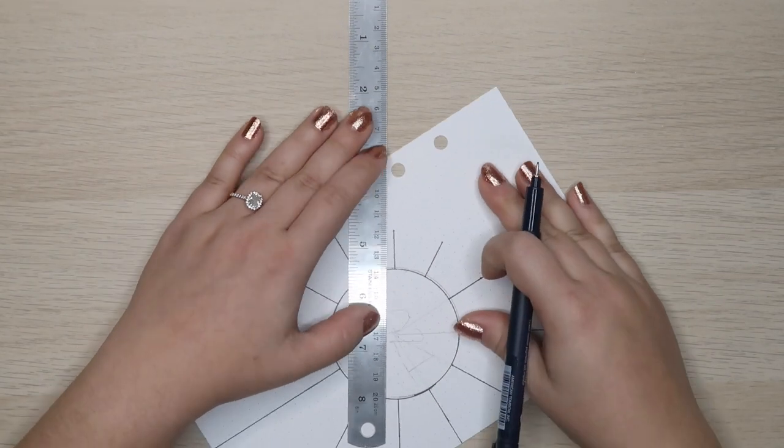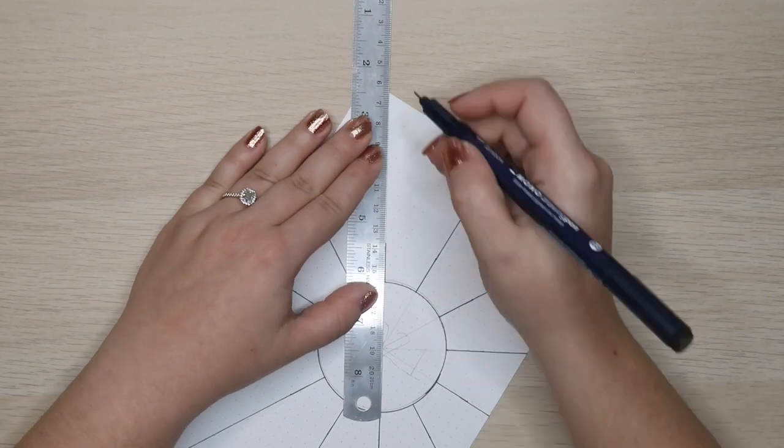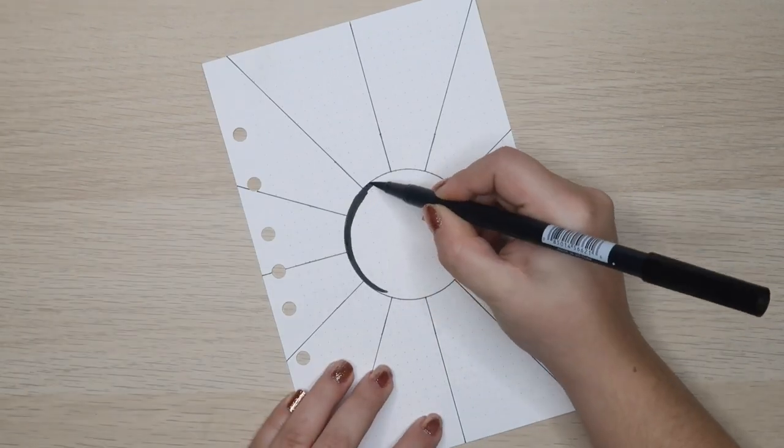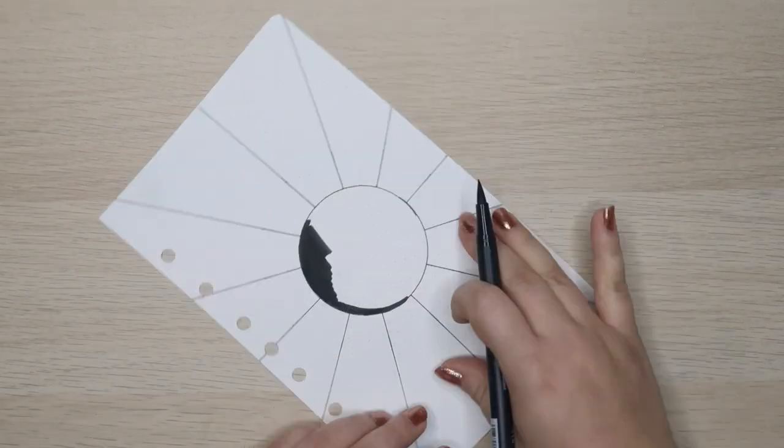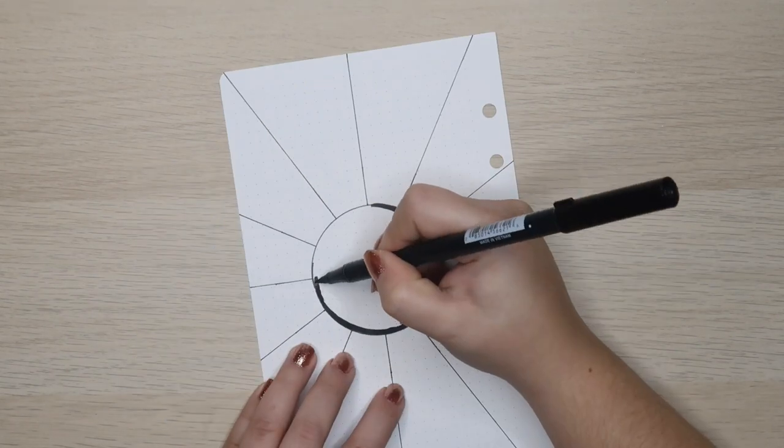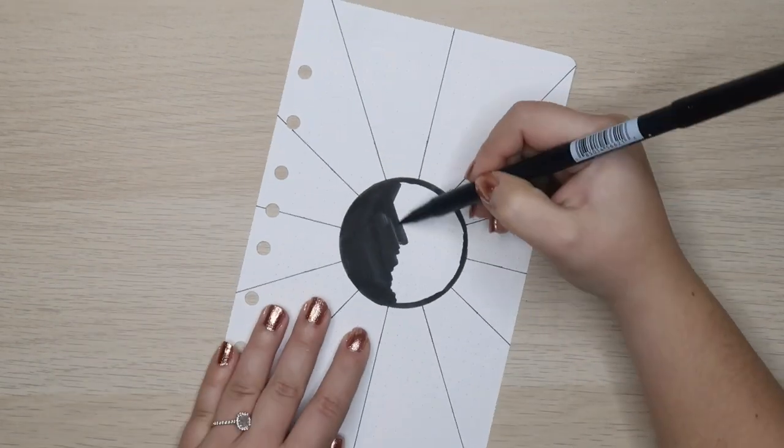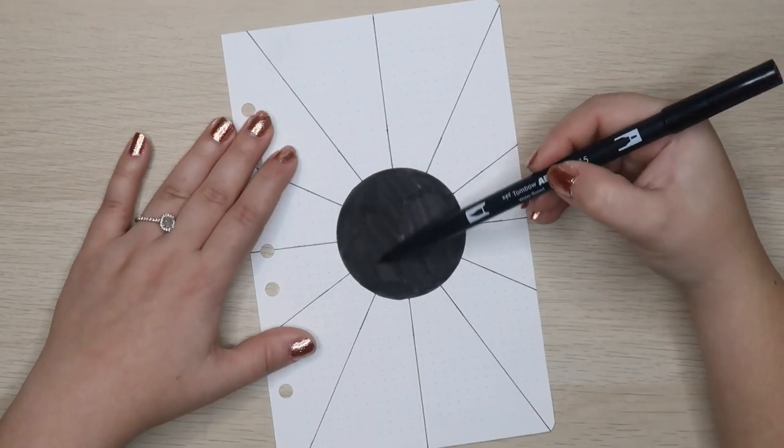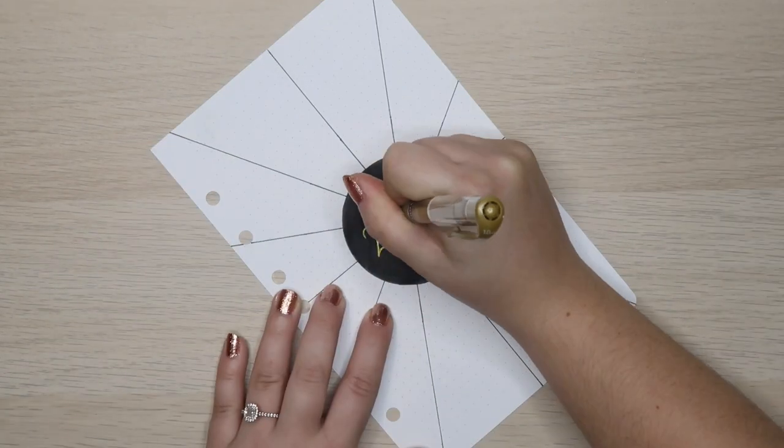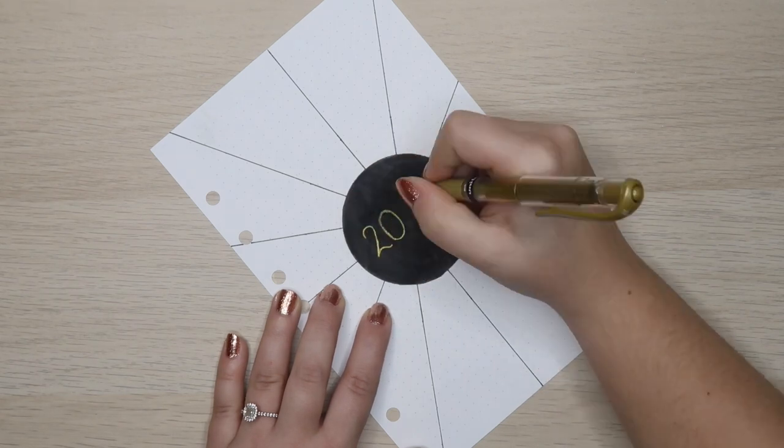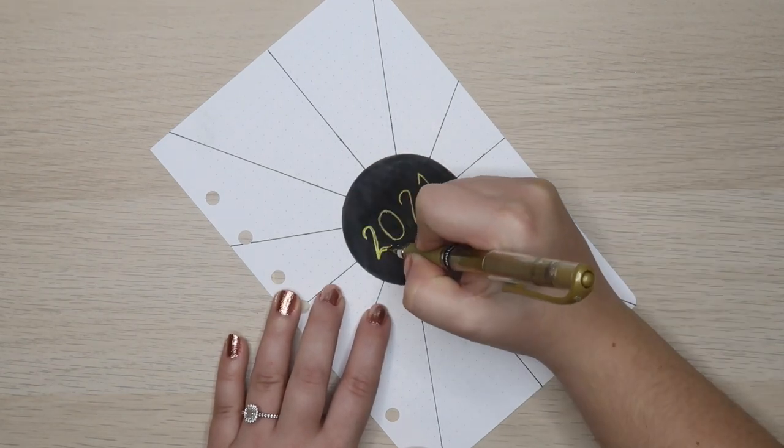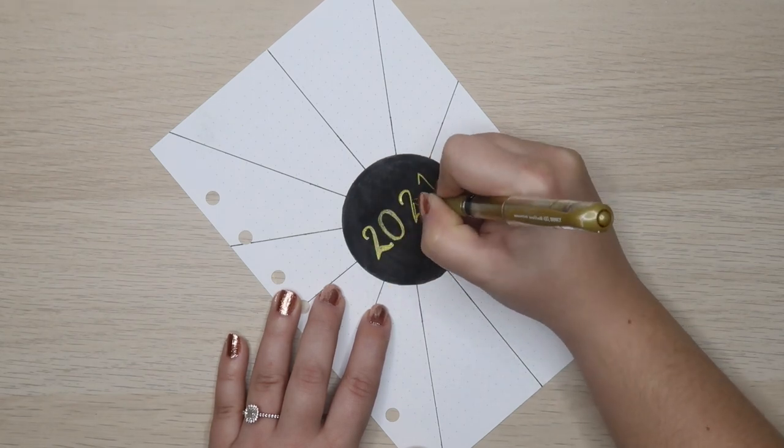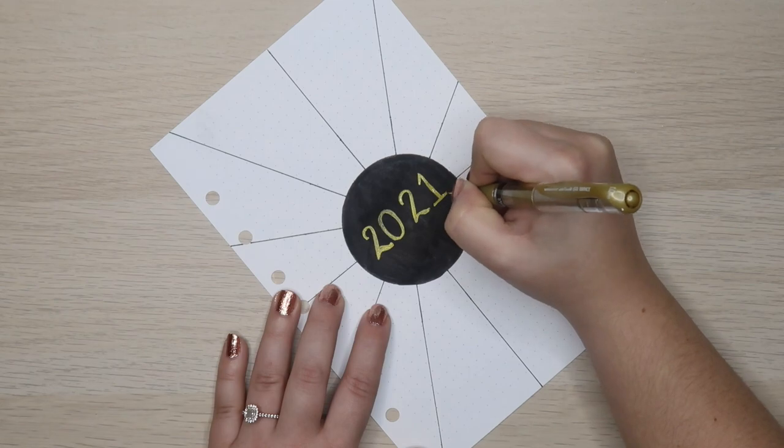And then at the end of the year, it'll be a collection of all of the themes for that entire year. So with that in mind, I decided to keep the design of the page super simple with a black circle in the middle with the year written in gold. And surprisingly, my favorite metallic pen these days is this very inexpensive uniball gel impact one millimeter metallic pen. I actually got it at Walmart in a pack with gold, silver, and white. And spoiler alert, you'll be seeing this pen quite a bit throughout this setup.